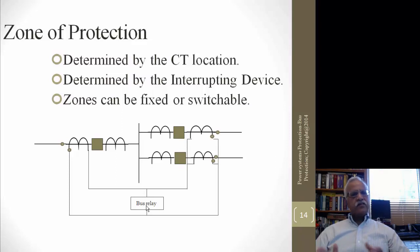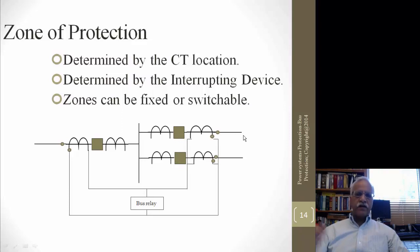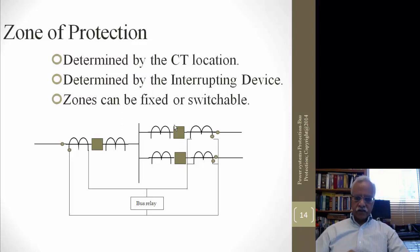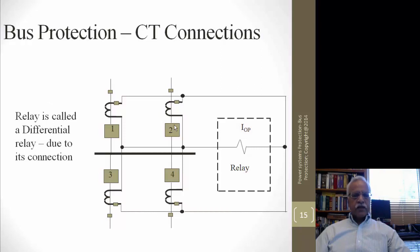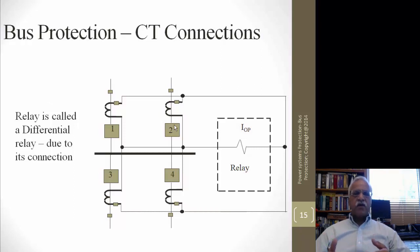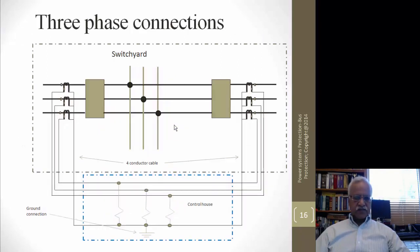Zones are defined by CT location and the interrupting device, and these zones can be fixed or switchable. If there is a problem with one breaker, we may shift our zone to the CTs on the adjacent breakers. Bus protection is called a differential relay because the relay is connected differentially across the CTs connected in parallel — it monitors only the differential current, i.e., the difference between current coming into and going out of the bus.